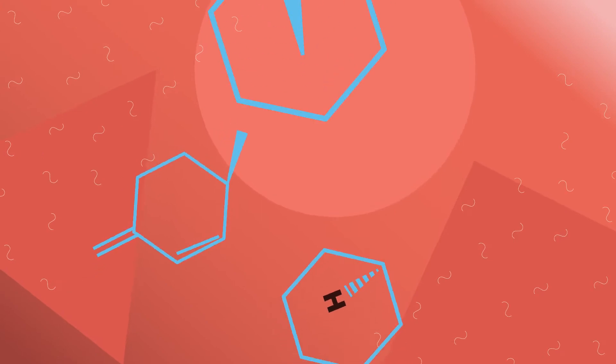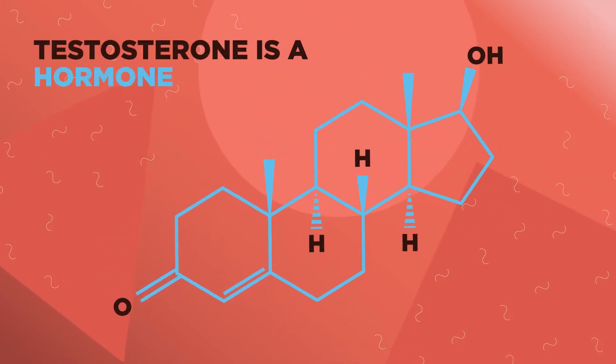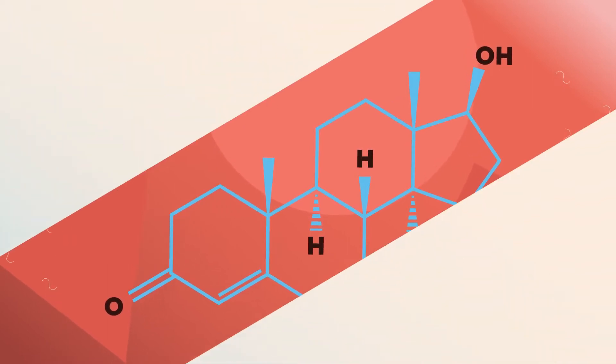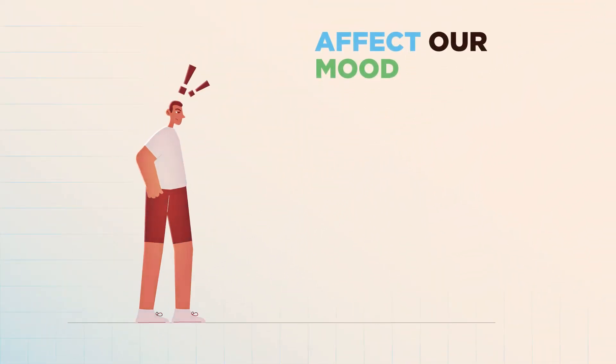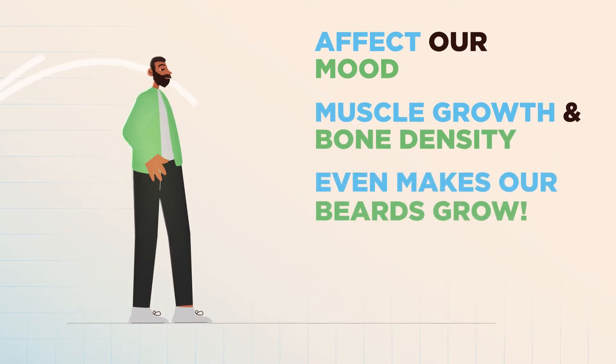Their first job is to produce testosterone. Testosterone is a hormone, a chemical messenger that carries messages around our bodies, which affects us in a number of ways. It can affect our mood, it stimulates muscle growth and bone density, and it even makes our beards grow.